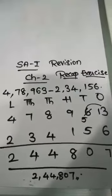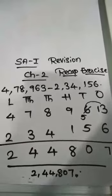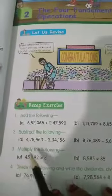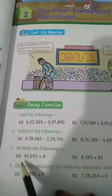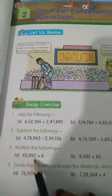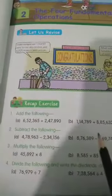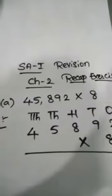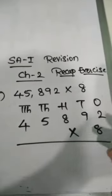So let us do the third bit: multiply the following. Let us solve the third bit — multiply the following. First question: 45,892 into 8. So let us solve this. This is the third bit, first problem — here we have to multiply.